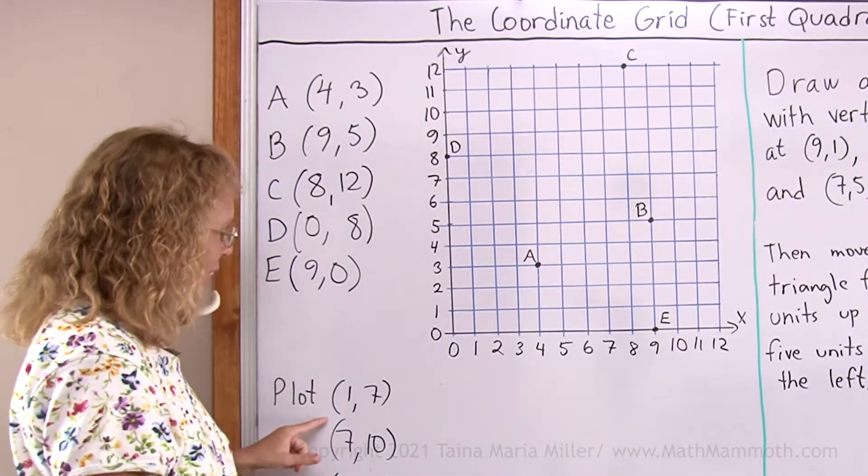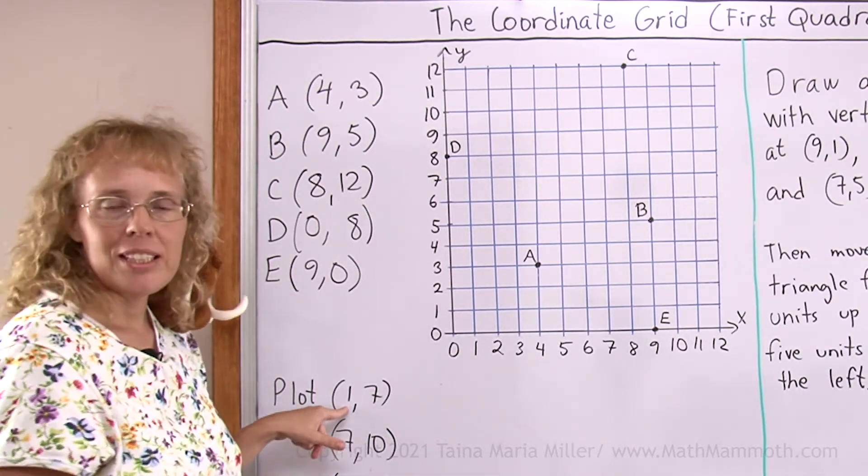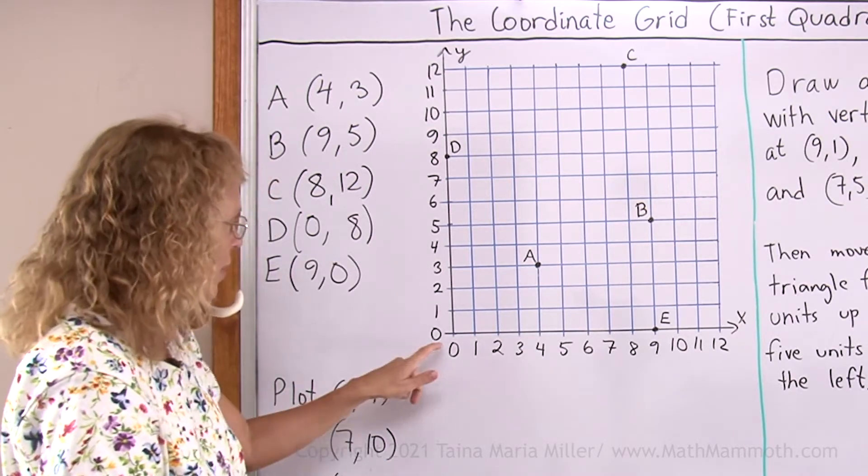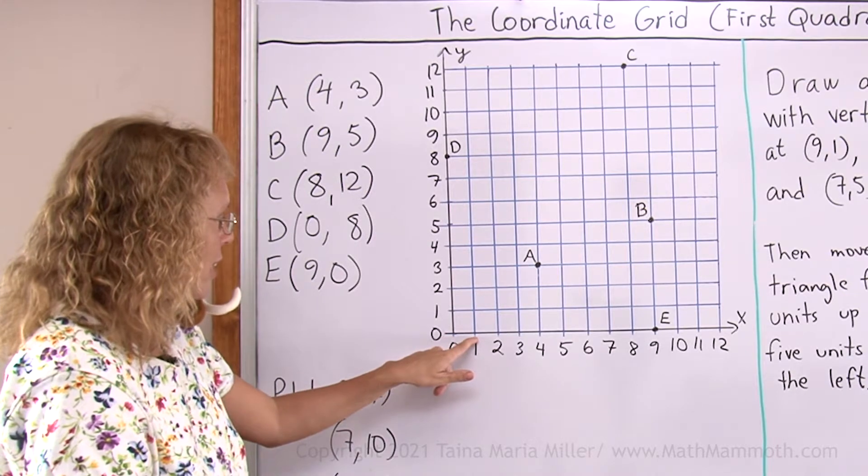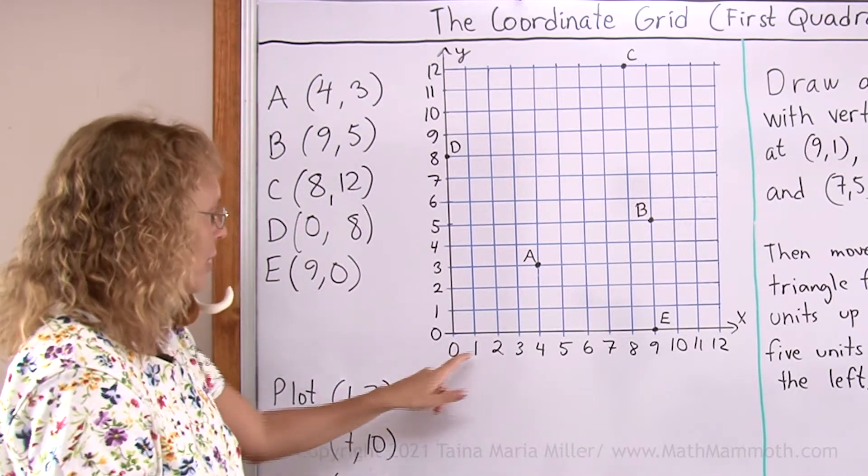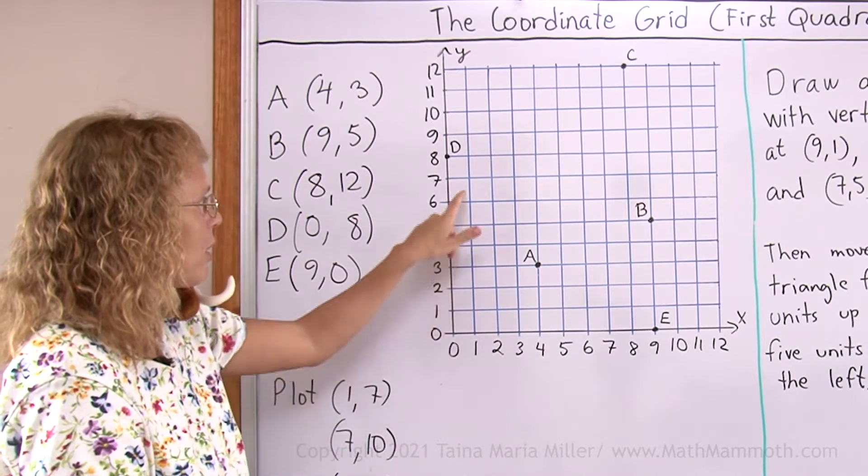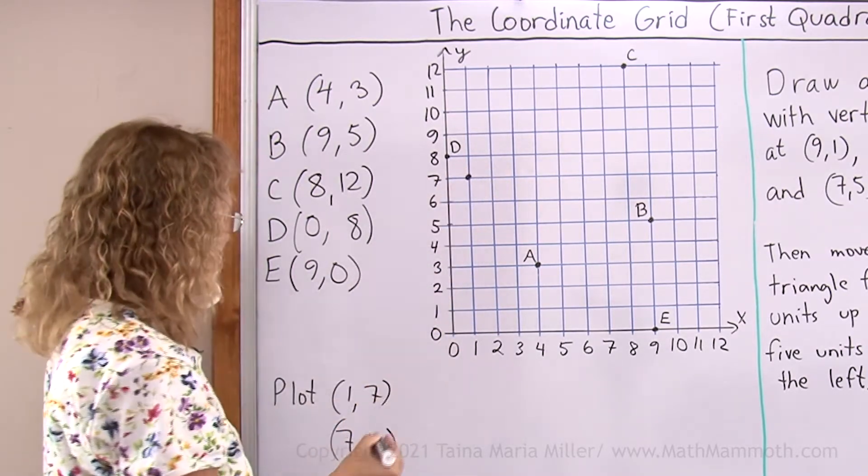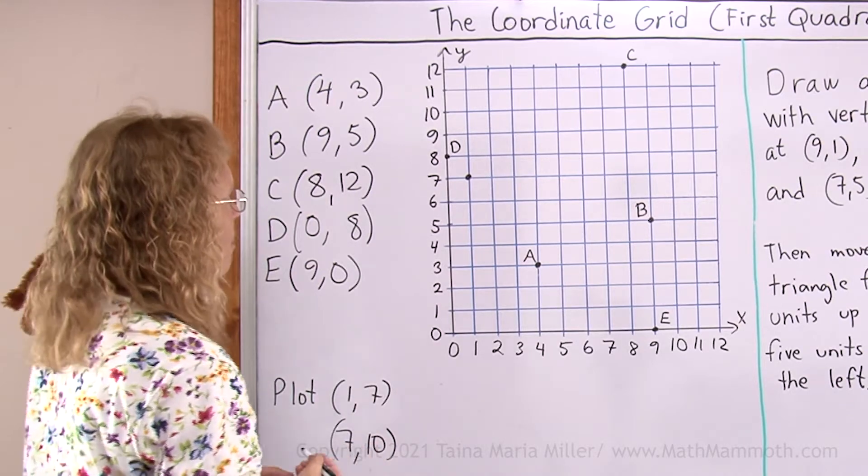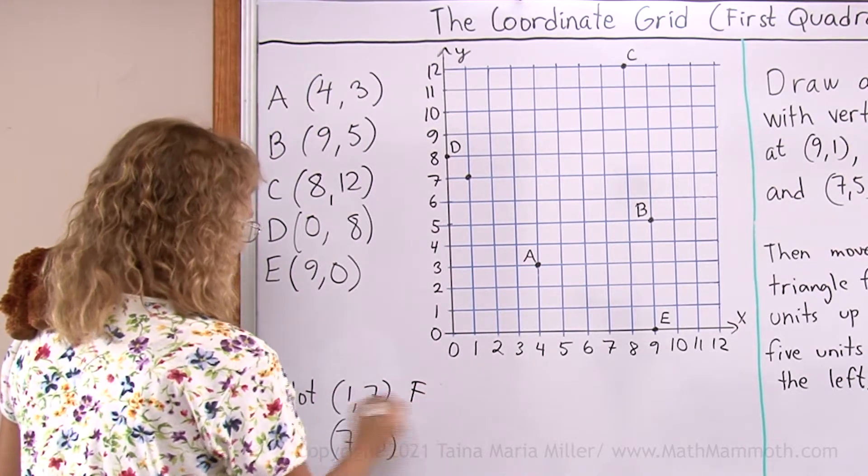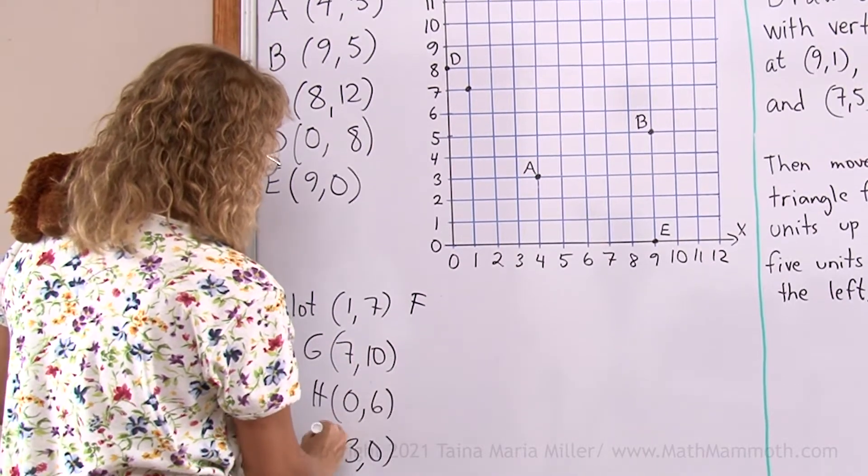Plot these points. 1, 7. The first one is the x-coordinate. What I do, I will travel on the x-axis to 1 over here, and then I will travel up 7 units. First travel on the x-axis to 1, then up 7 units, over here. This point is at 1, 7. I could name it point F. This would be G, H, and I.